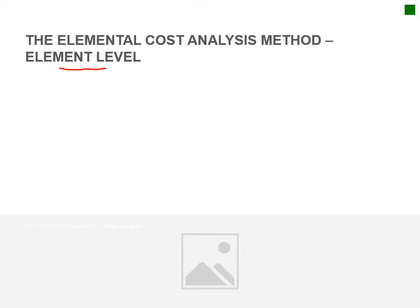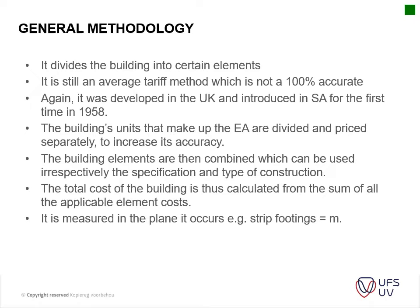This is the follow-up on the previous section 7.1. In 7.2 we're going to look at the elemental cost analysis method, specifically up to the elemental level. Please note that this method is also connected to the detailed methods, where we actually work up to the component level and not just the elemental level of estimation. We'll cover this in more detail in our next section when we look at the detailed methods.